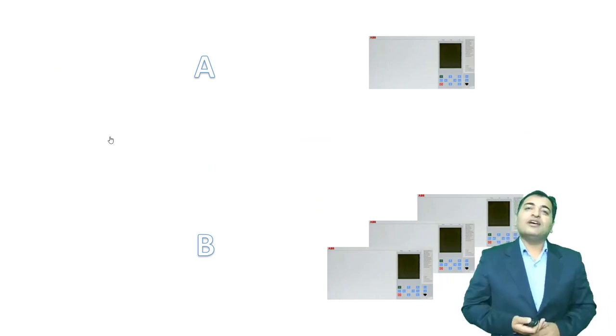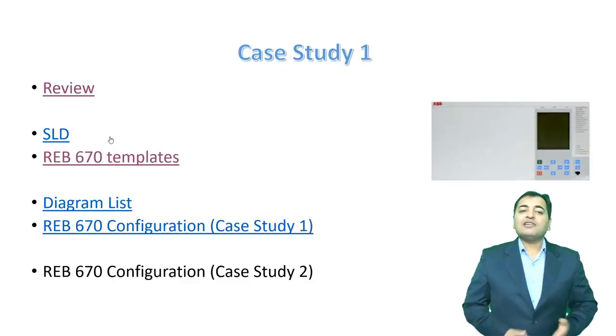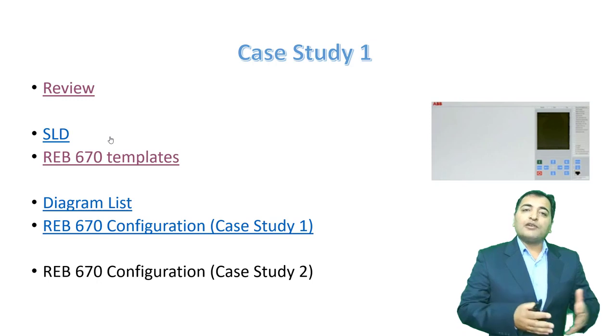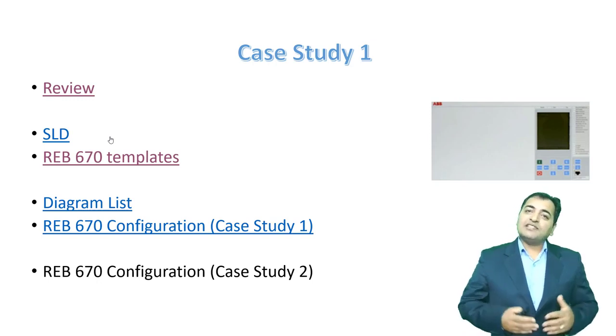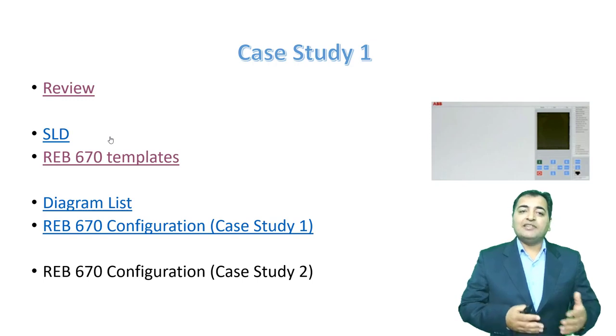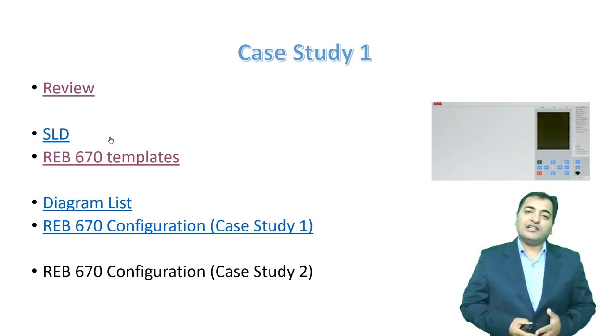A is for three-phase busbar protection relay and if we are going to use single-phase busbar protection we should use the B templates. We are going to discuss this in detail. After explaining the templates and some of the configuration of these templates we will go for our case study project. We will select a proper template and after that we will see how we can modify the templates for the case study project.